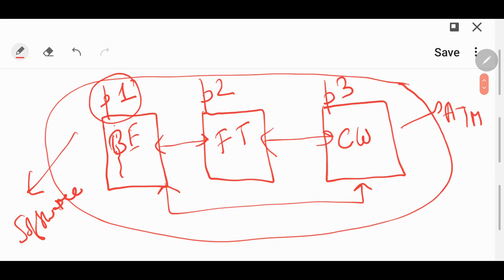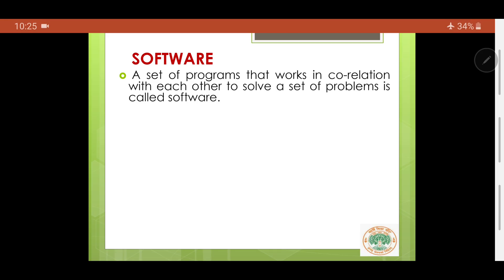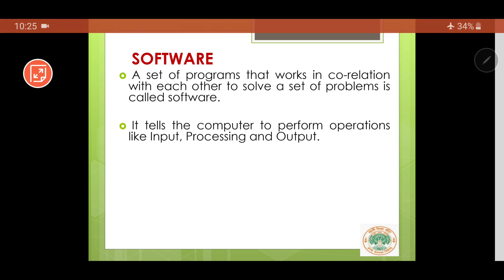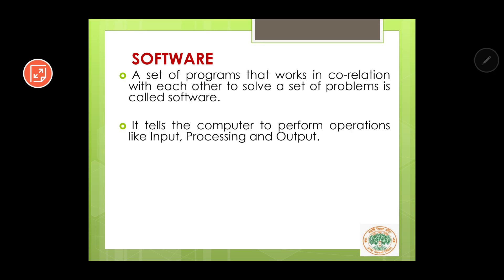So what is software? Software is a set of programs that works in correlation with each other. Whatever set of programs are there, there must be some relation among those programs — if there is a relation among a set of programs, we call it software. The purpose of software is to solve a set of problems.